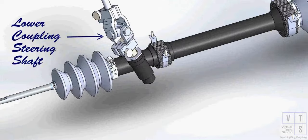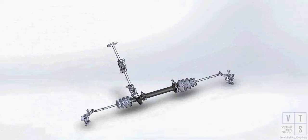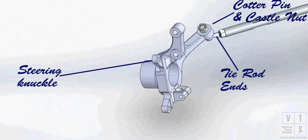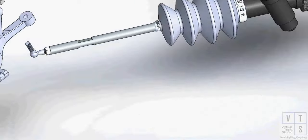Remove the lower bolt of the steering's lower shaft coupling. Remove cotter pins and tie rod castle nuts from both knuckles, then disconnect tie rod ends from knuckles.